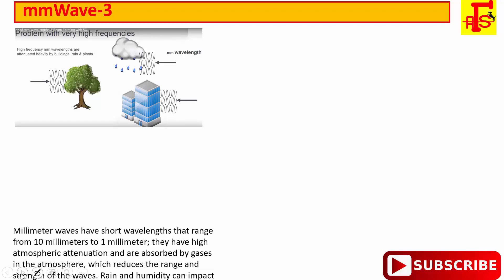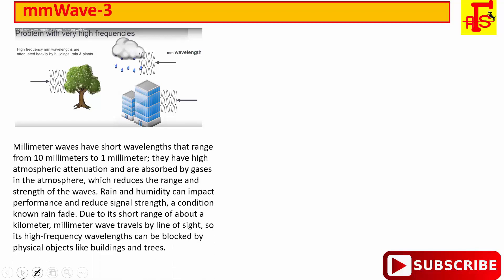As discussed, millimeter waves have short wavelengths ranging from 10 mm to 1 mm. They have high atmospheric attenuation and are absorbed by gases in the atmosphere, which reduces the range and strength of the signal. Rain and humidity can also impact performance. Due to short range — about less than one kilometer — millimeter waves travel by line of sight, and their high-frequency wavelength can be blocked by physical objects like buildings and trees.